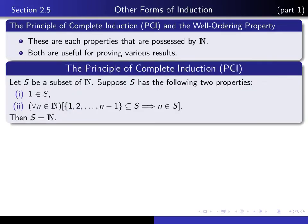Here is the statement of the principle of complete induction — we'll use the acronym PCI to refer to it. We let S be a subset of the natural numbers and suppose it has two properties: one is an element of S, and for every natural number N, if we know that the set of natural numbers from 1 up to N minus 1 is a subset of S, then we're able to deduce that N is an element of S. If S has those two properties, then PCI says that S is equal to the natural numbers.